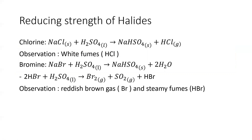Reducing strength of halides increases down the group. When NaCl reacts with H₂SO₄, you get NaHSO₄ and hydrogen chloride gas — the observation is white fumes. When NaBr reacts with H₂SO₄, you get NaHSO₄ and HBr, but HBr further reduces H₂SO₄ to sulfur dioxide, producing a reddish-brown gas and steamy fumes.